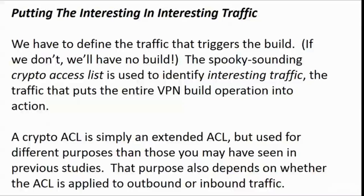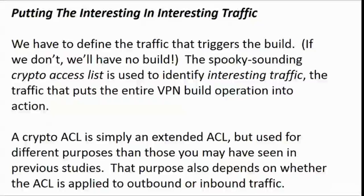With our IKE policy and IKESA policy in place, both policies written, it's time to define the interesting traffic with a crypto access list. This is how we define the traffic that's going to trigger the VPN build. Because if we don't, the default is we're not going to have a build — and if you don't have interesting traffic defined, that is the traffic that puts the entire VPN build into operation.